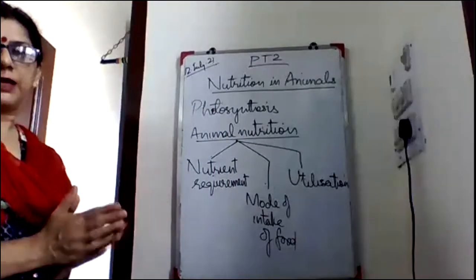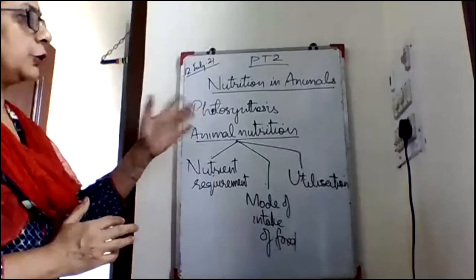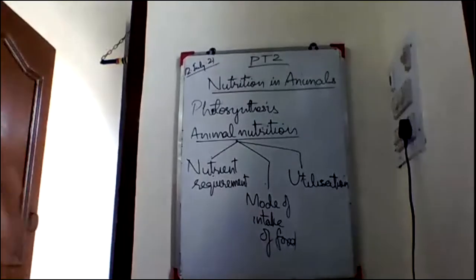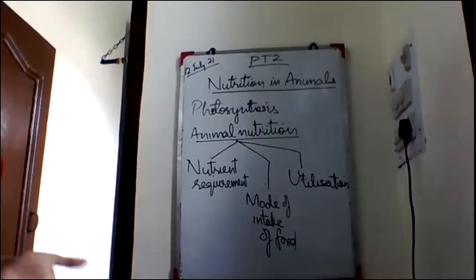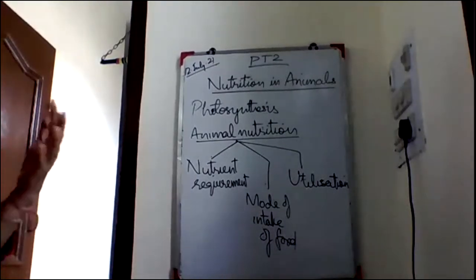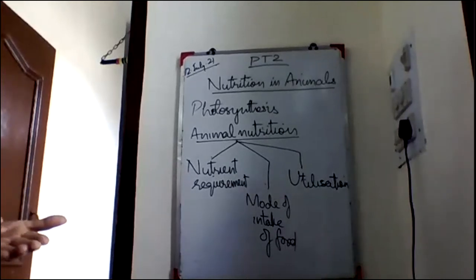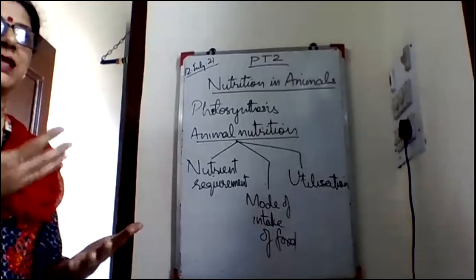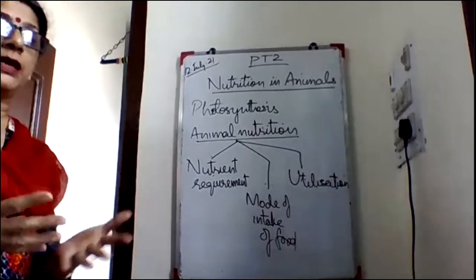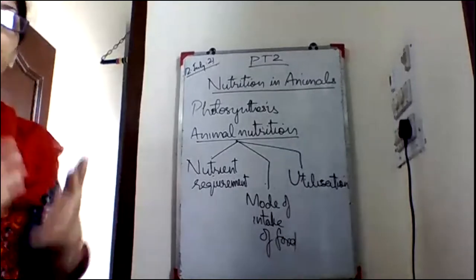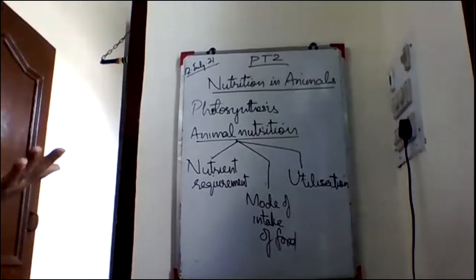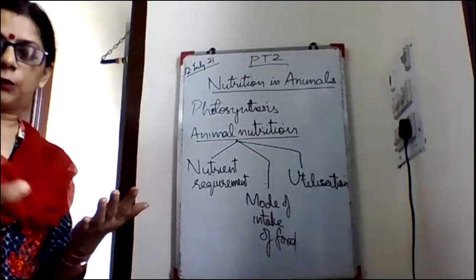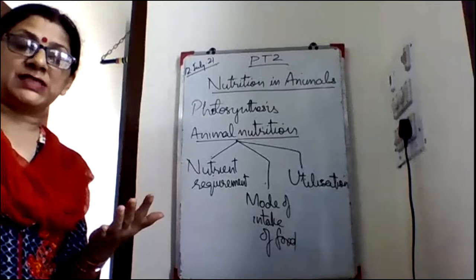We are starting with Chapter: Nutrition in Animals, the second chapter. We know that plants can prepare their own food but animals cannot. Animals get their food from plants either directly or indirectly — we are getting plant products like wheat and rice, or we are eating animals which eat plants, like chicken, fish, or mutton.